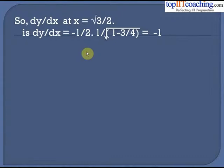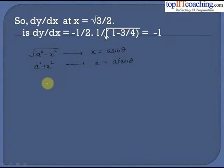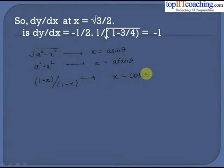For standard forms: if a function involves √(a²−x²), substitute x = a sinθ; if it involves a²+x², substitute x = a tanθ; and if it involves (1+x)/(1−x), substitute x = cos2θ. These substitutions reduce complex expressions to simpler ones that are much easier to differentiate.